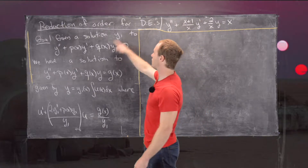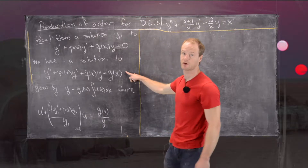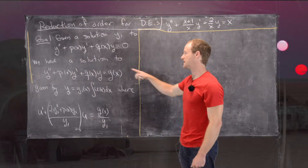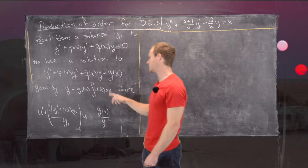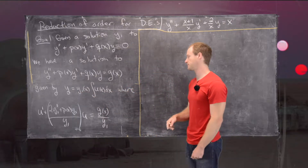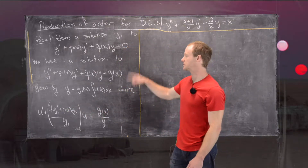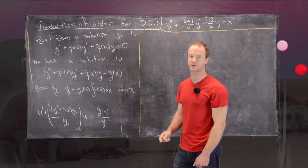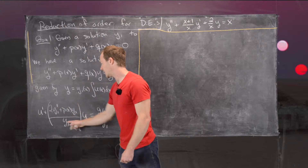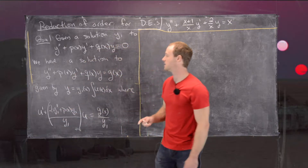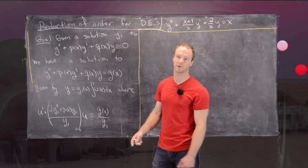Given a solution y1 to the corresponding homogeneous differential equation, we have a solution to the non-homogeneous equation given by y equals y1(x) times the antiderivative of u(x), where u is a solution to a first-order linear differential equation. So we've simplified the whole problem to solving a first-order linear ODE: u prime plus a function related to the original equation times u equals g(x) over y1.